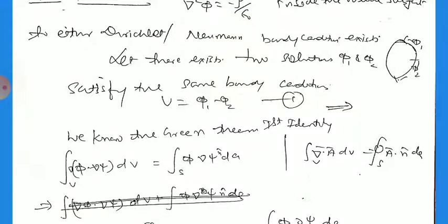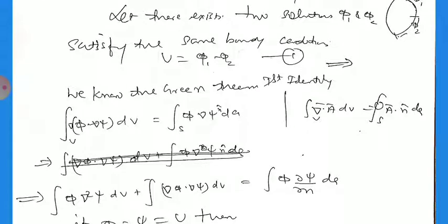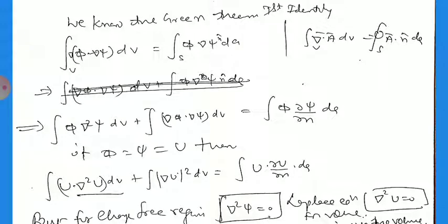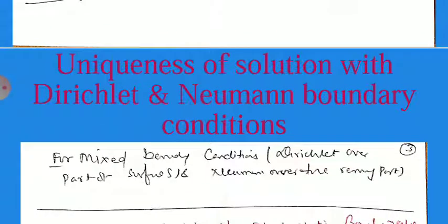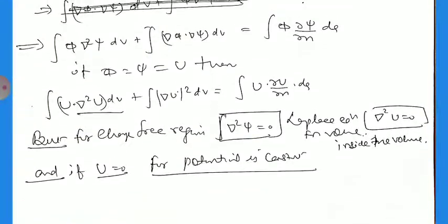In place of A we write phi del psi. Applying the product rule differentiation, we get terms involving phi del squared psi and del u squared. The volume integral of del u squared equals the surface integral of u del u dot dA. Inside the volume, the Laplace equation gives del squared u equals zero, so the integral of del u squared equals zero. For the Dirichlet case u equals zero on the surface, and for the Neumann case del u by del n equals zero, giving u equal to a constant. For mixed boundary conditions, Dirichlet applies on part of the surface and Neumann on the remaining part.